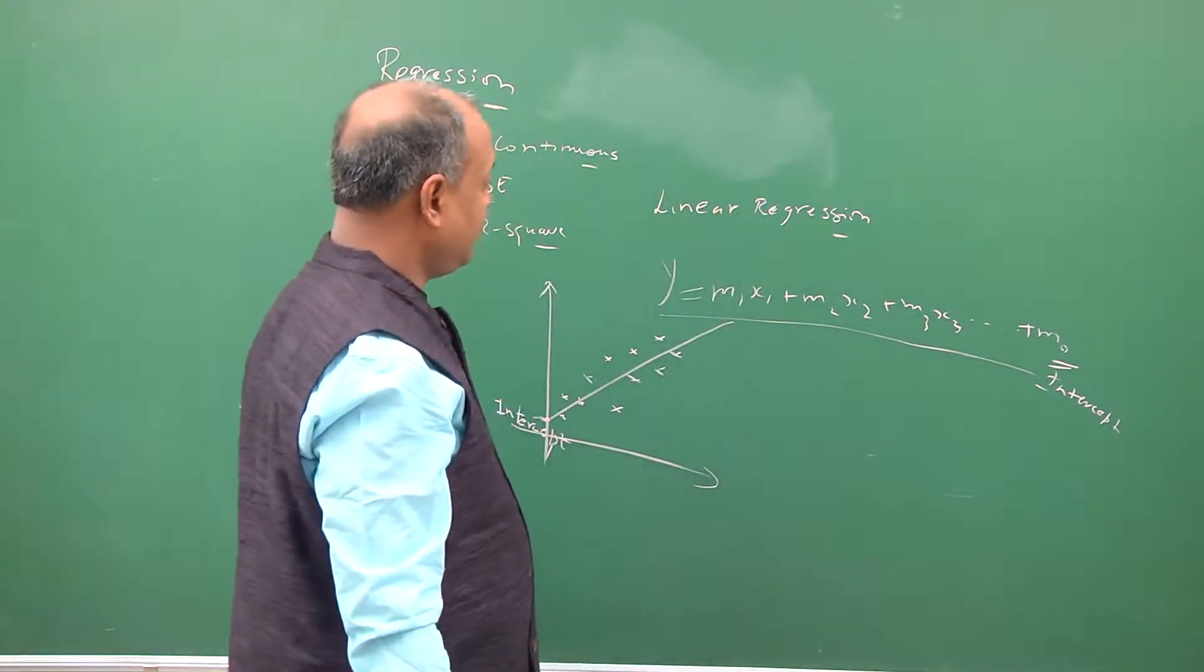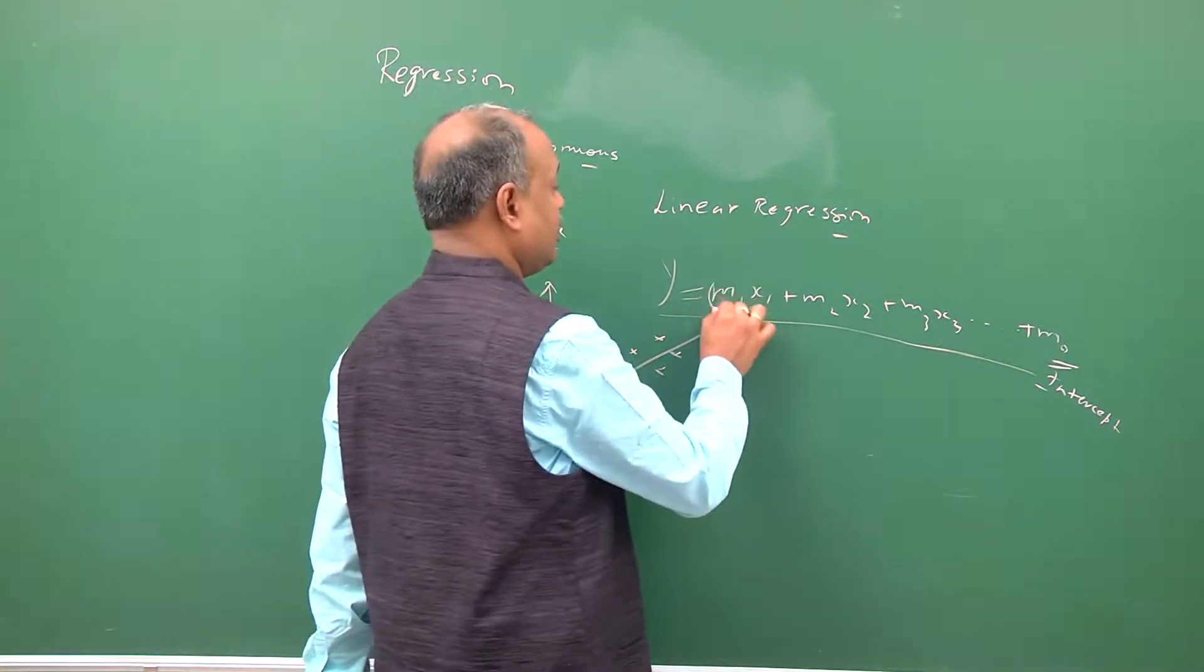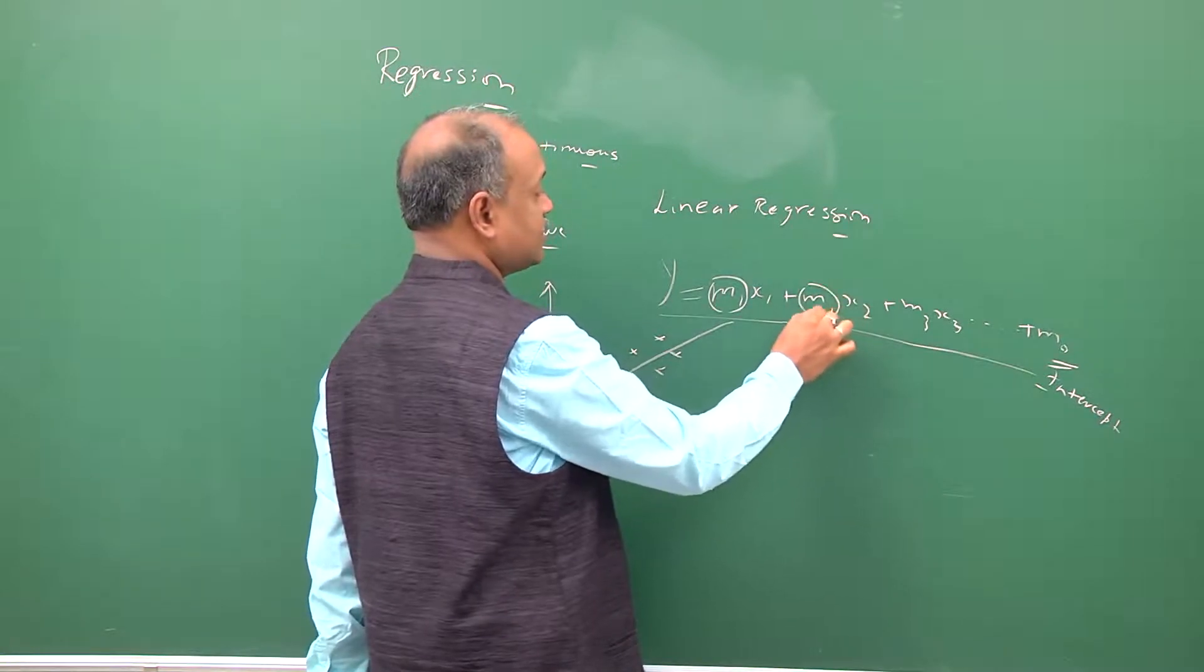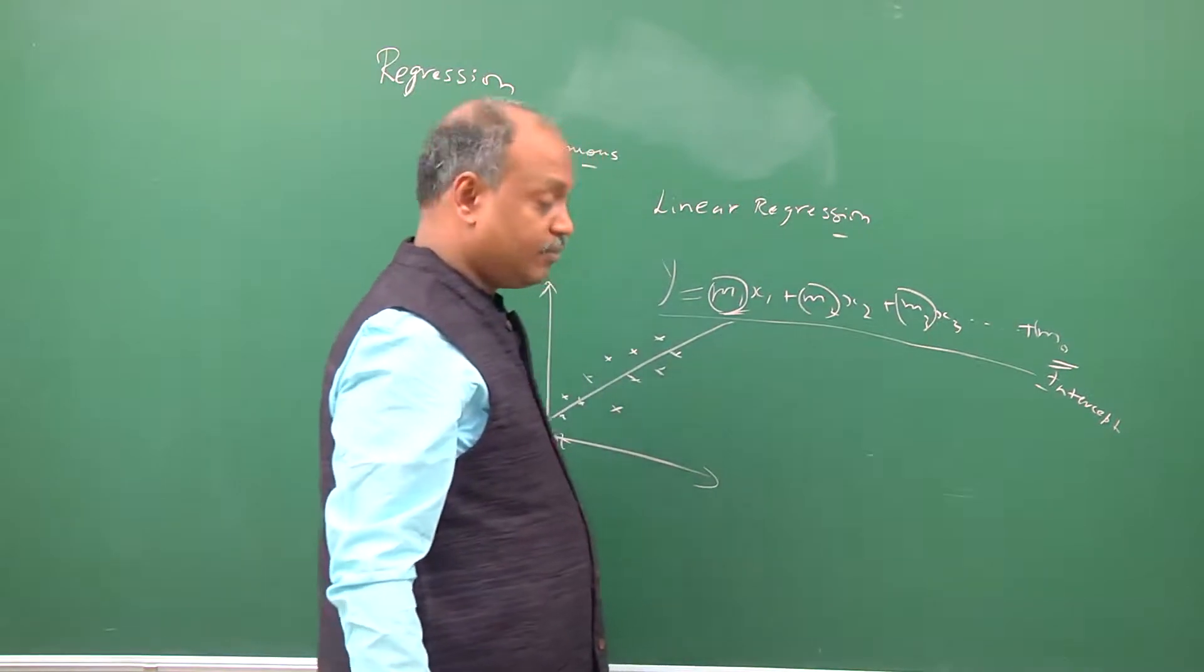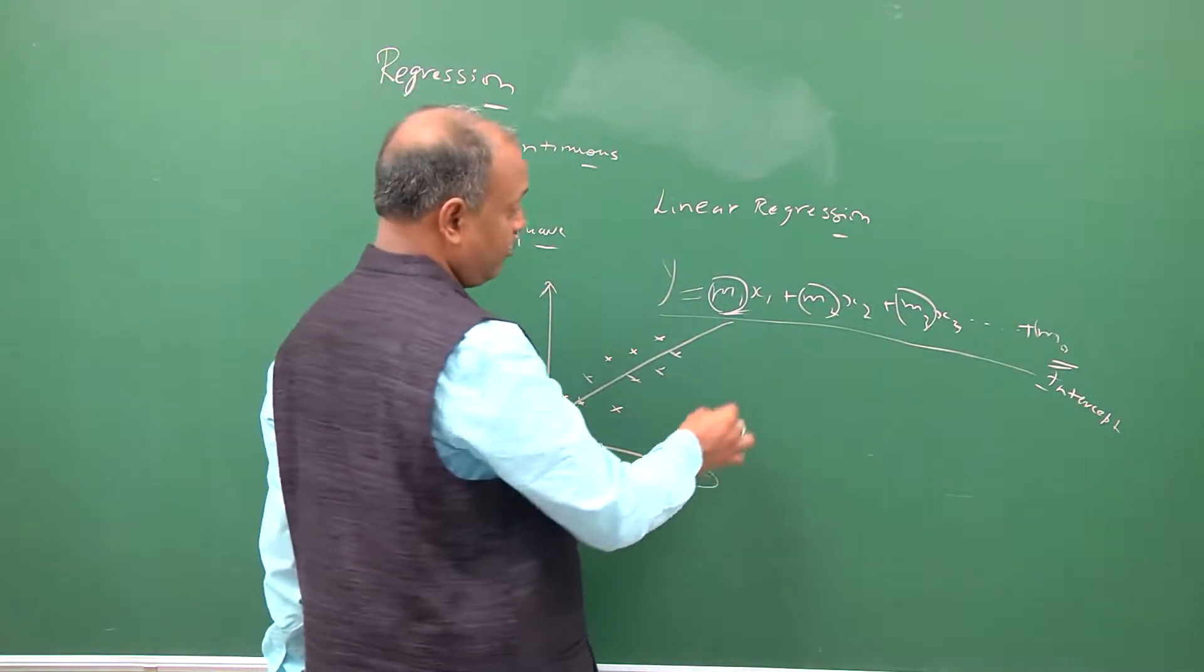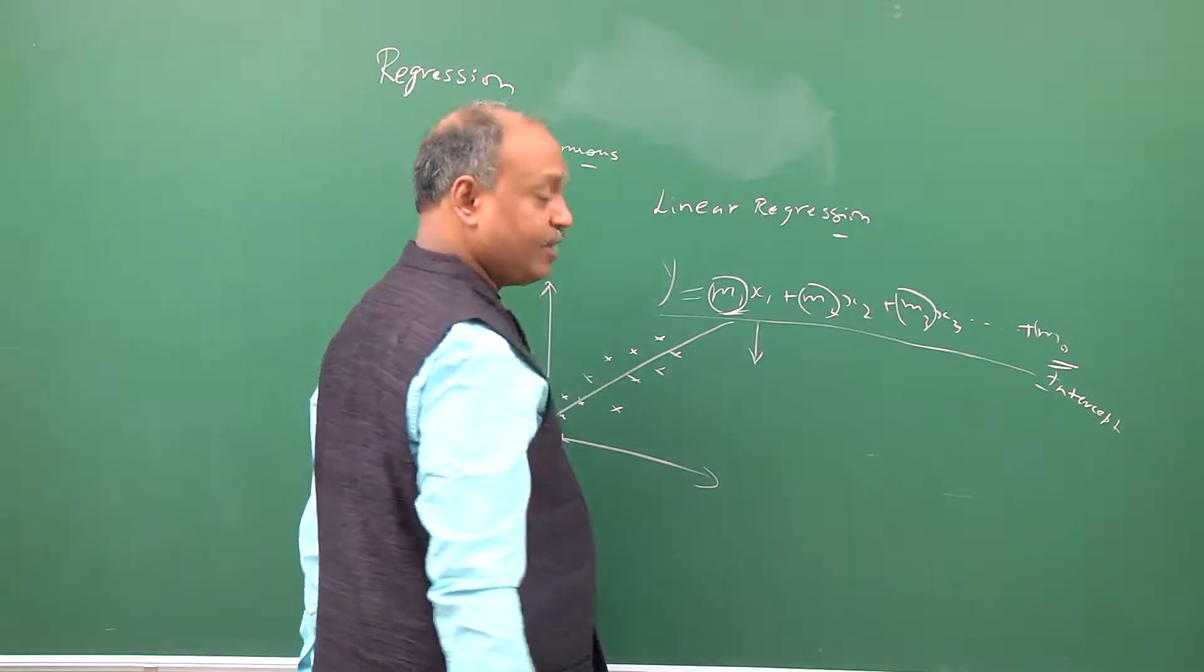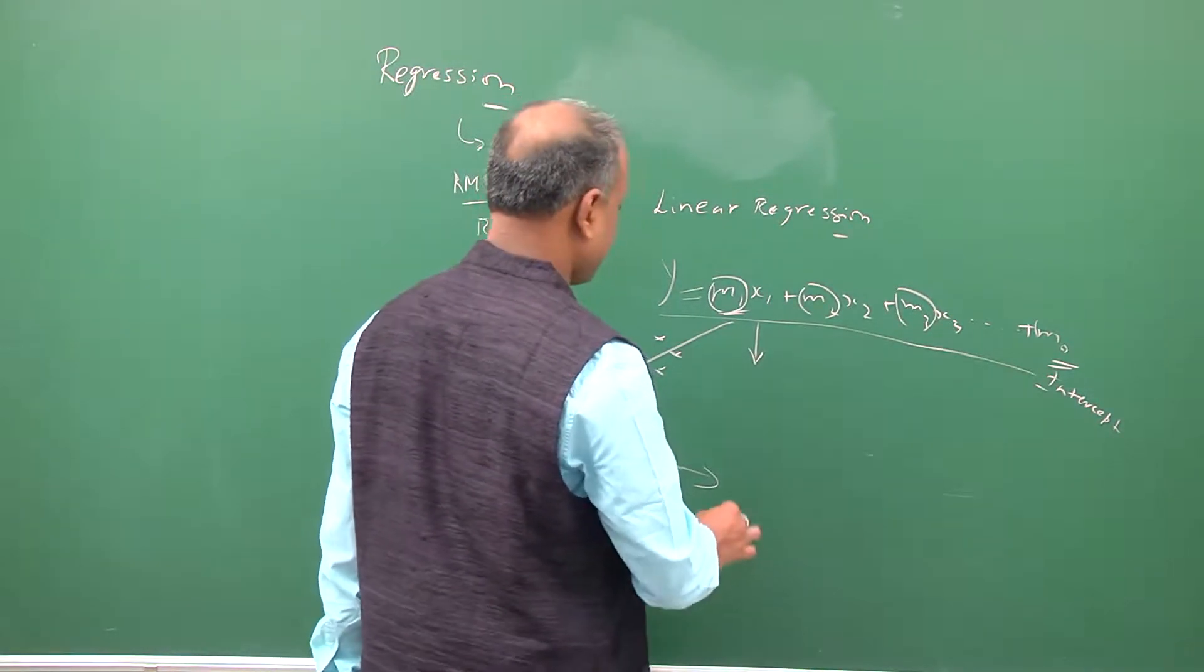And then the parameters here are the coefficients of each of the variables. Now when you look at fitting a straight line you will typically have the evaluation measure as root mean square error.